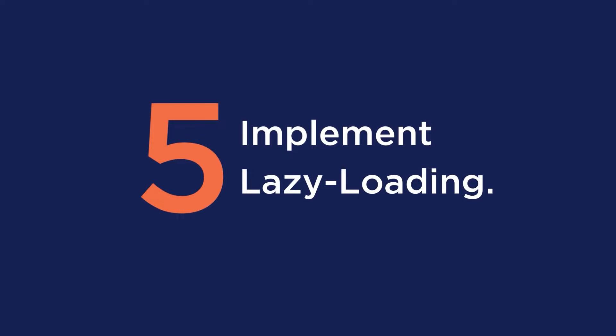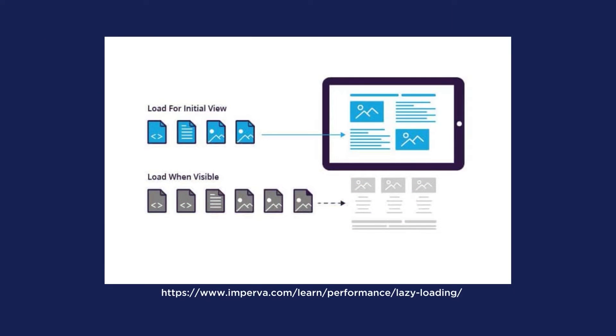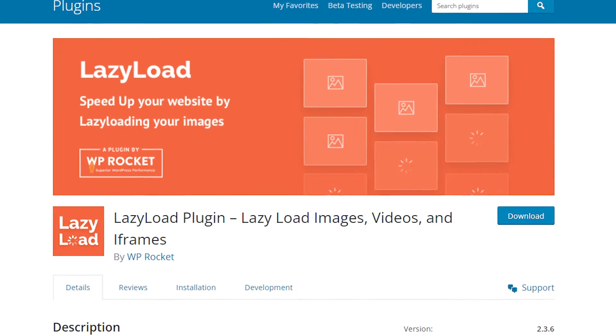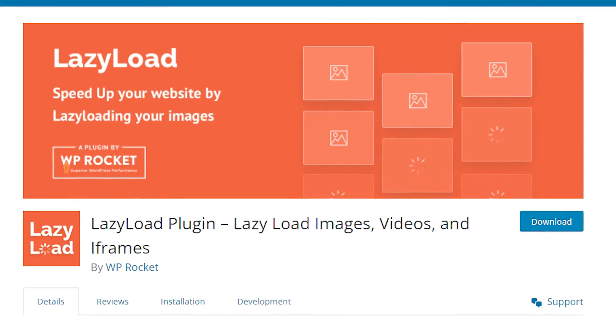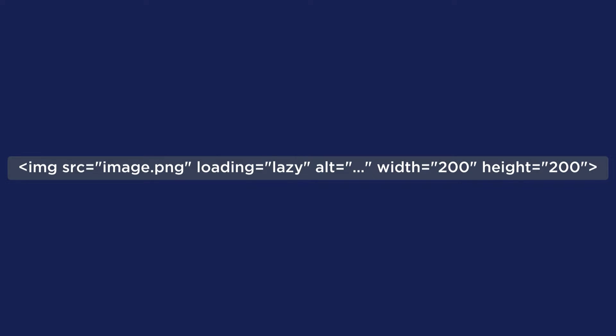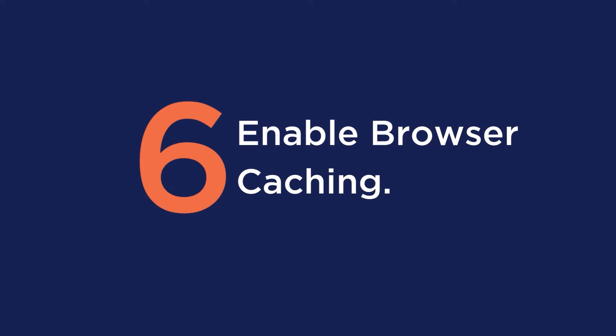Technique five: implement lazy loading. Lazy loading is one of the most efficient ways to optimize your images for Google and performance — it tells the browser to only download the images that the visitor is currently viewing. To apply lazy loading, you can use a free WordPress plugin like Lazy Load by WP Rocket, or implement it manually by adding the lazy loading tag to your image, as shown on screen.